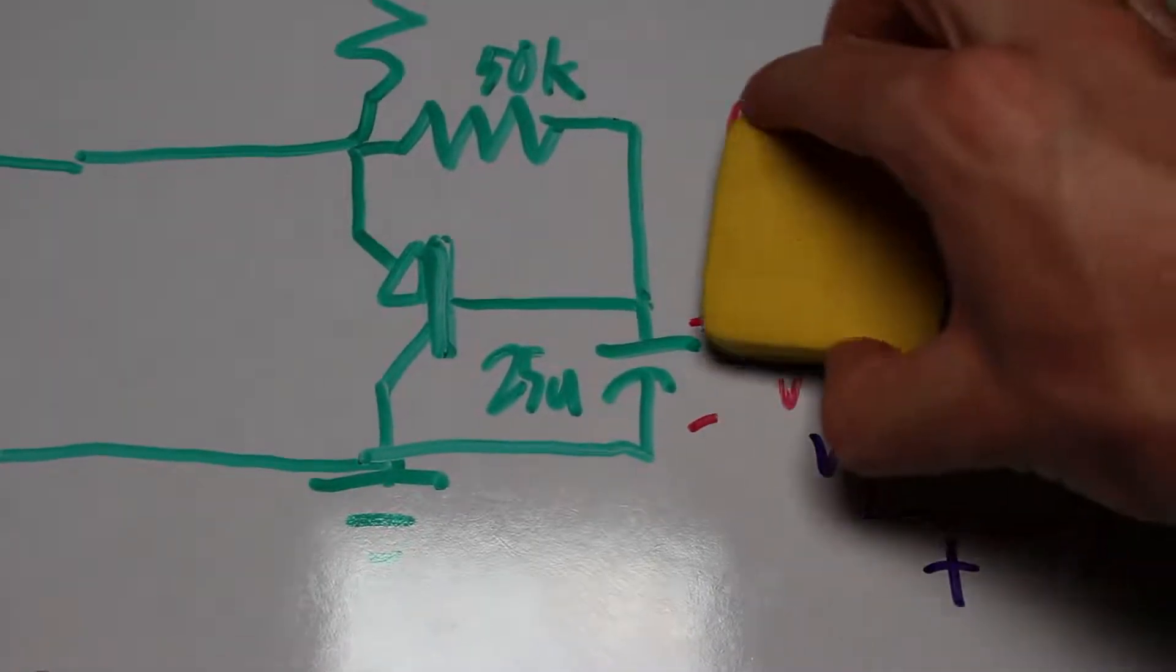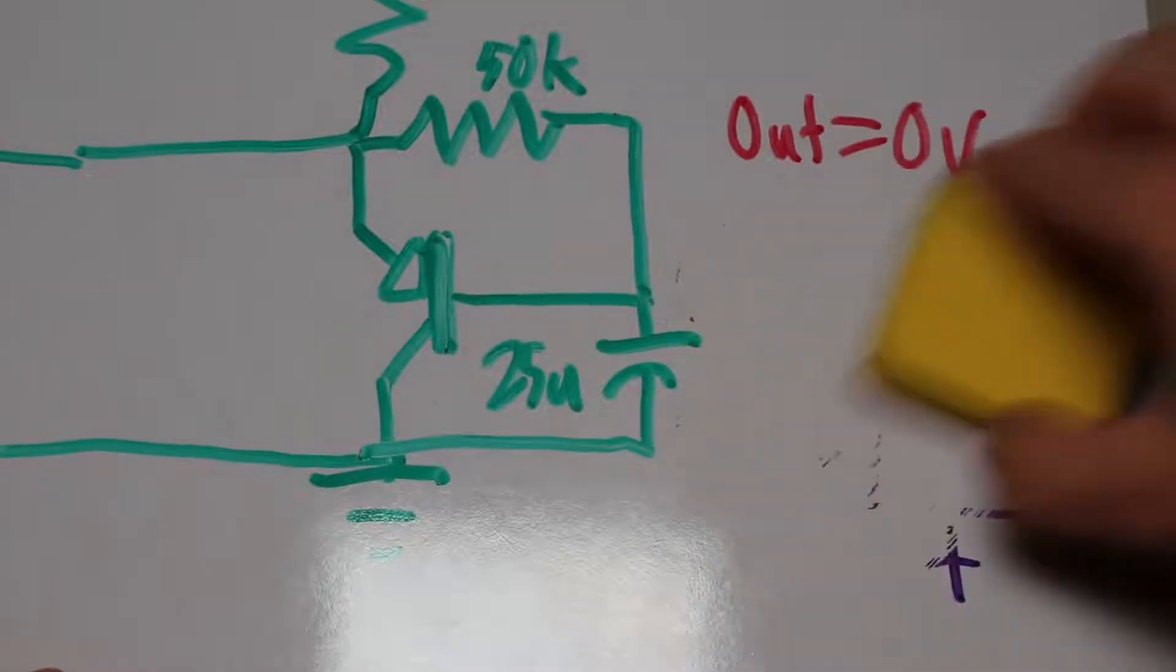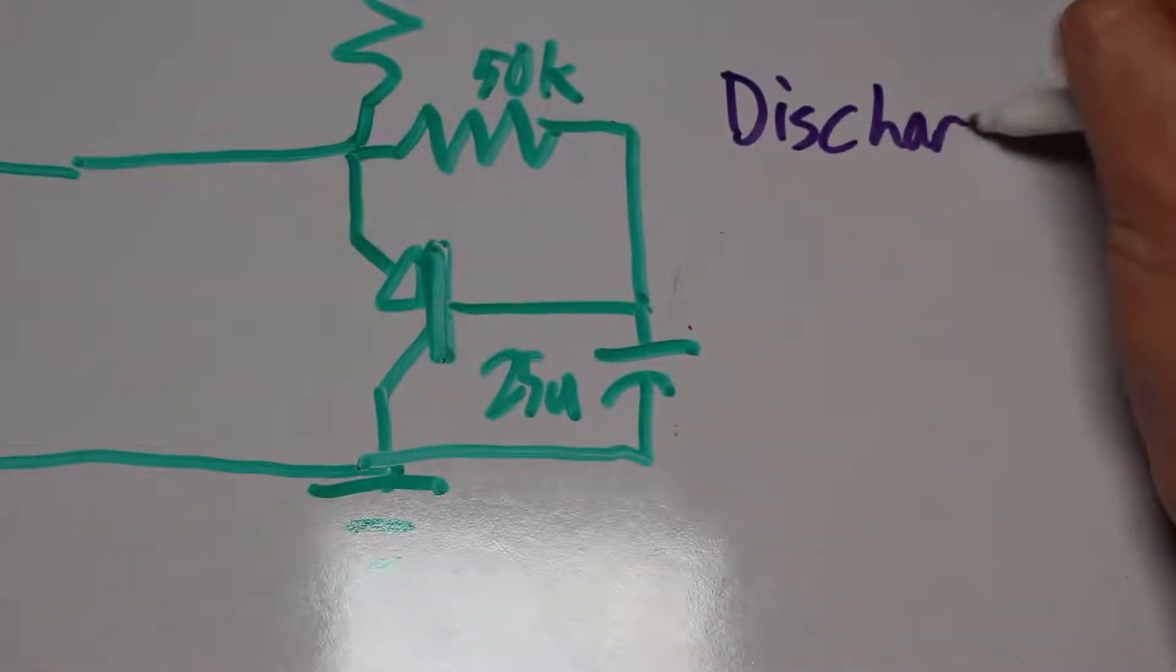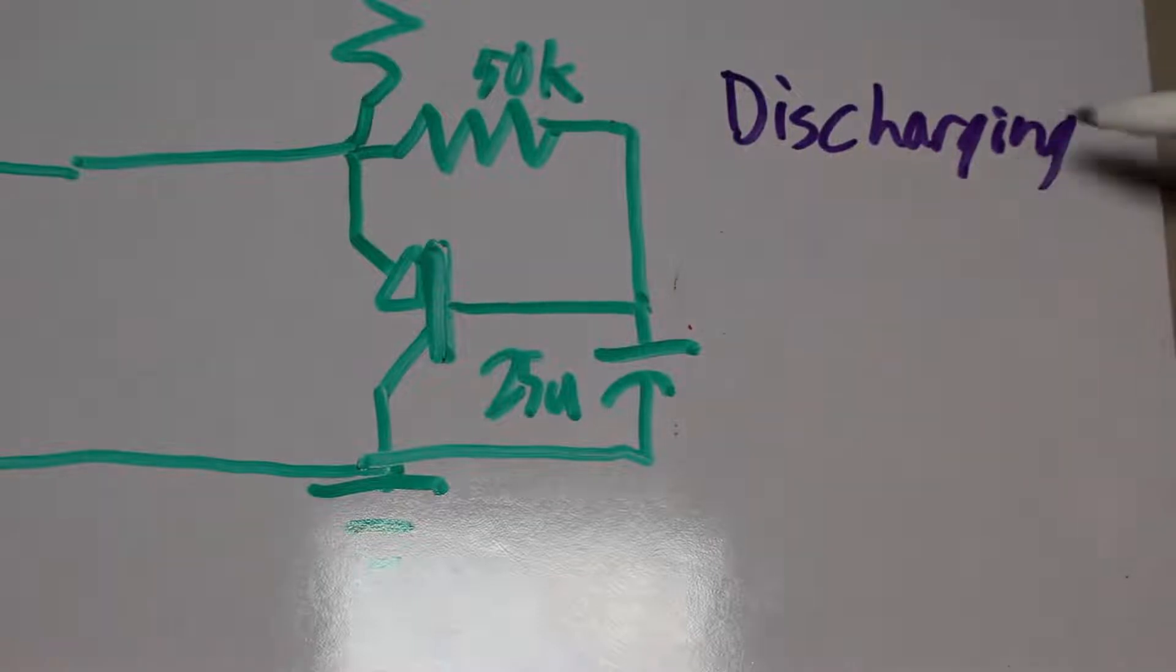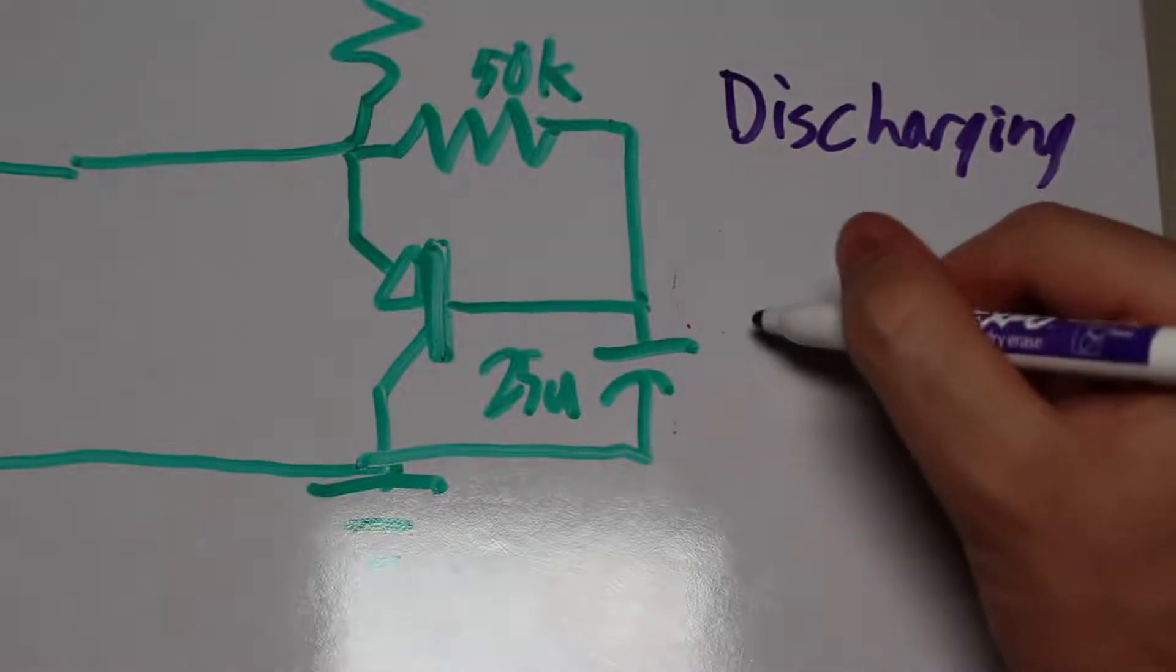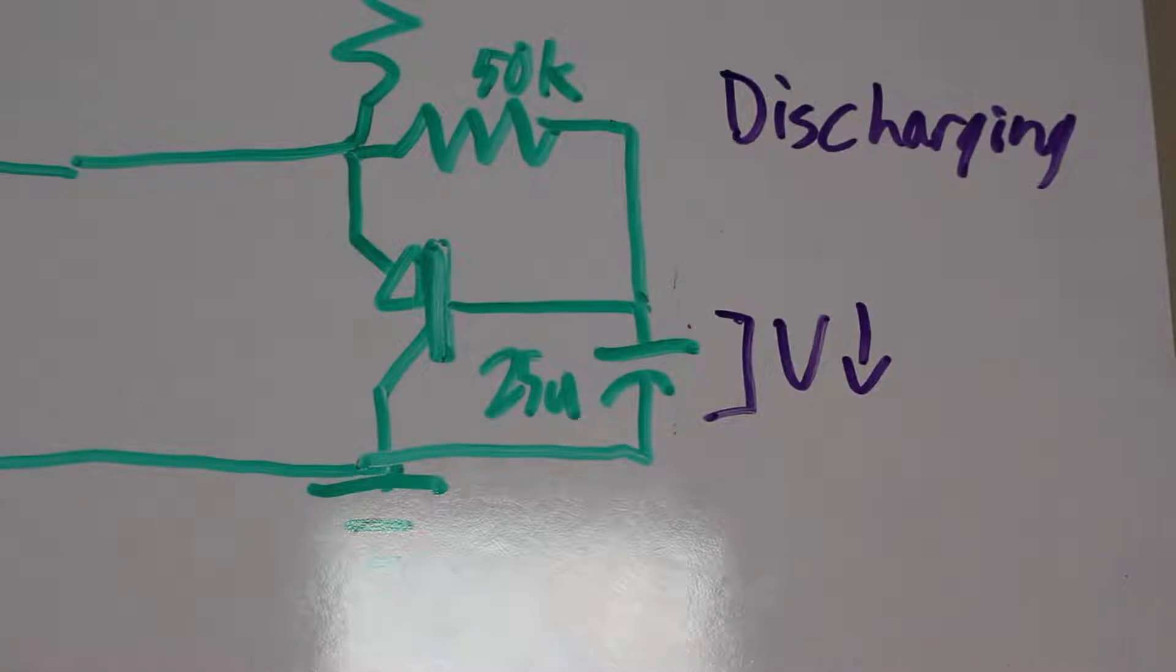Once the power to the regulator is shut off, or the regulator is adjusted to a lower voltage, the capacitor can discharge itself through the 50k resistor and the bottom potentiometer resistor. To have a faster turn-on time, you can lower the capacitance.